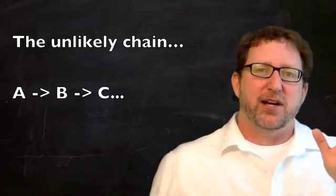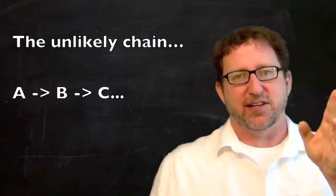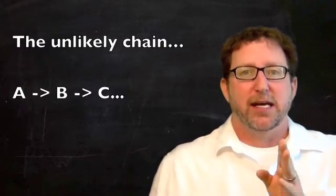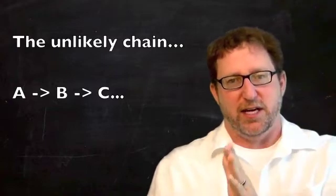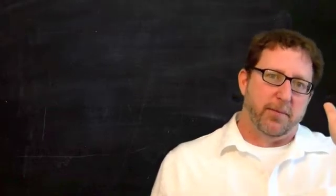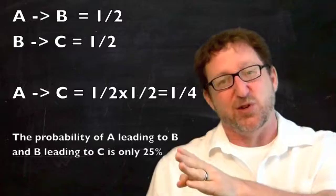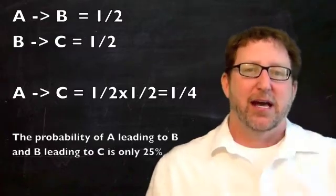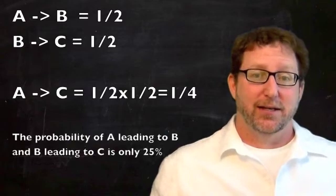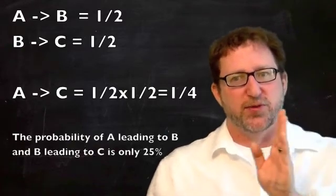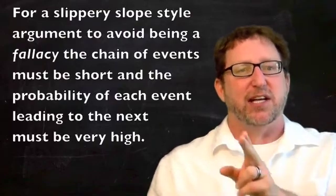The problem is that it is very unlikely that A will lead to C, unless the connection between A and B, and the connection between B and C is very probable. In determining probabilities, we multiply the likelihood of each event with the other. So if the probability of going from step A to step B is one half, or 50%, and the probability of going from B to C is one half, or 50%, we multiply those together, and you get the probability of going from A to C as being 25%. Not at all likely.